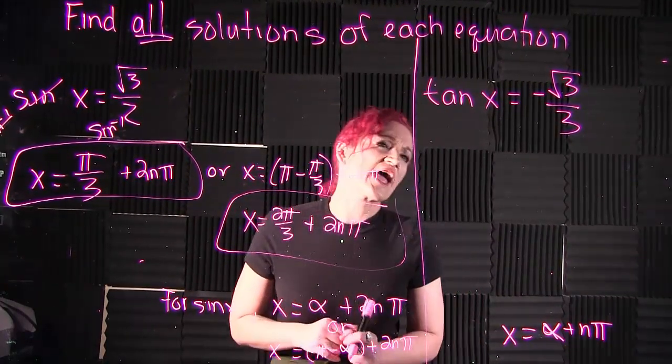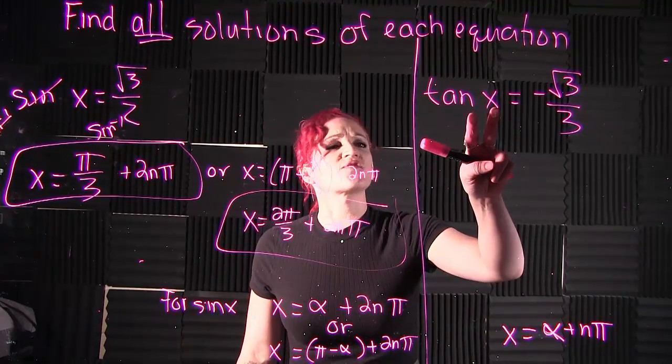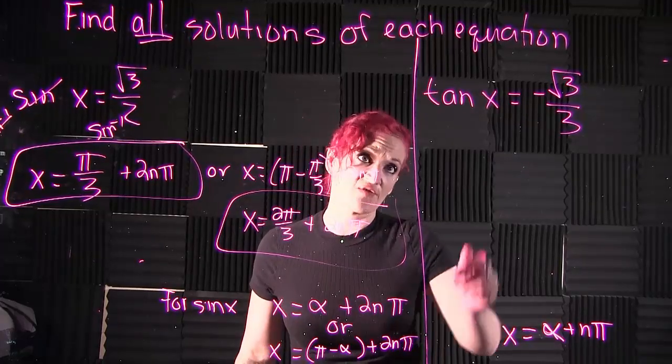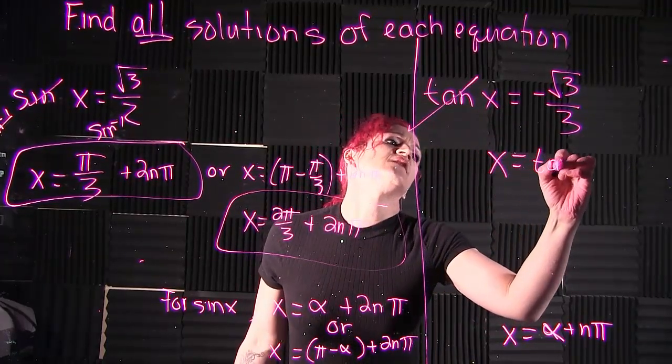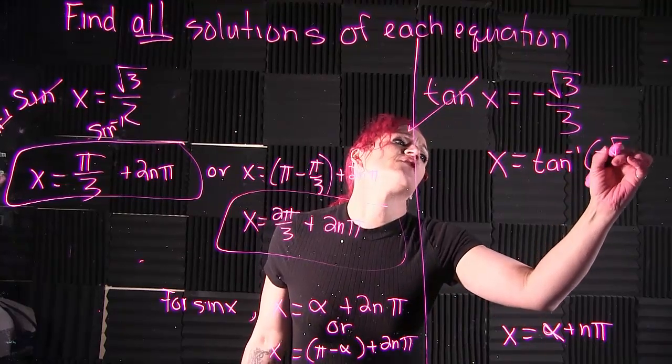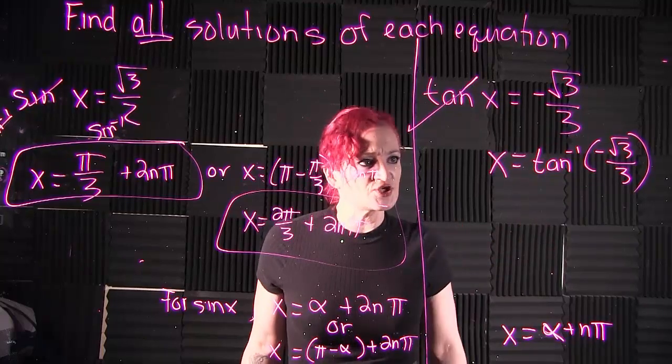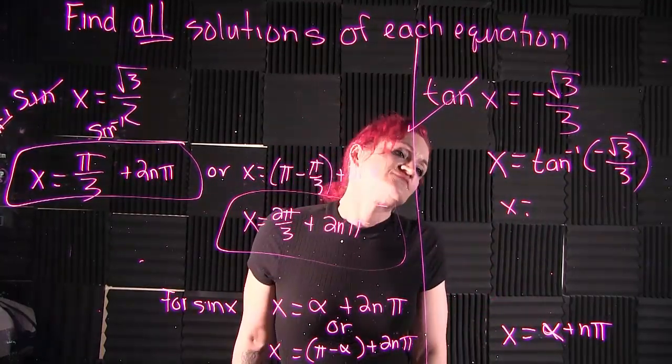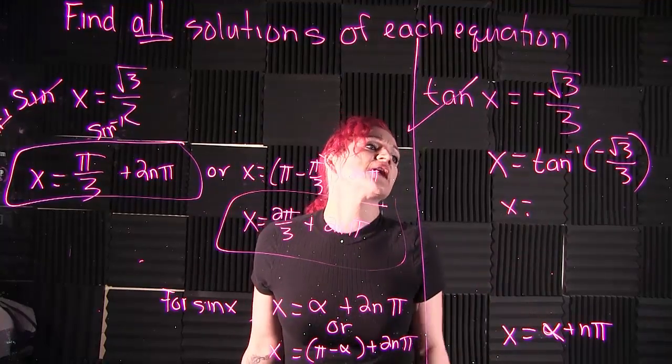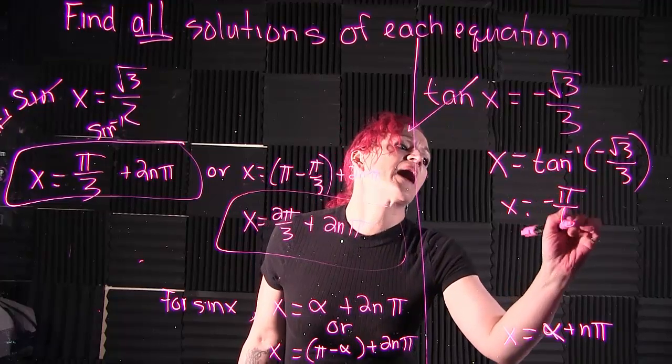We are given tangent x equals negative square root of 3 over 3. Again, to solve for x, we take inverse tangent of each side to cancel out tangent on the left. x equals the inverse tangent of negative square root of 3 over 3. Throwing that into your calculator, inverse tangent of negative square root of 3 over 3 is negative π over 6.